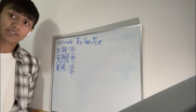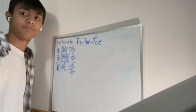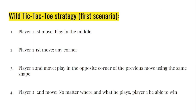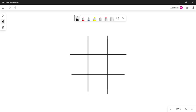That is how player one wins Ultimate Tic-Tac-Toe. Our next game is called Wild Tic-Tac-Toe. It's played on a three-by-three board, and the objective is the same as regular Tic-Tac-Toe — get three of the same shapes in a row. The only difference is that both players can play any of the two shapes. In Wild Tic-Tac-Toe, there's only one strategy for player one to win: playing in the middle for the first move. Then if player two plays in any corner, player one needs to play in the opposite corner using the same sign.